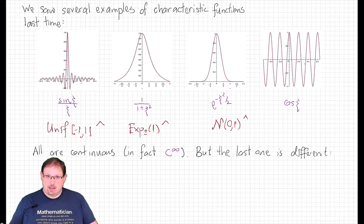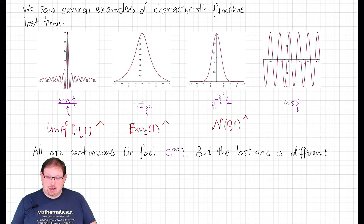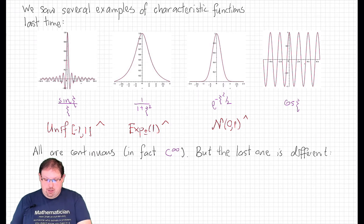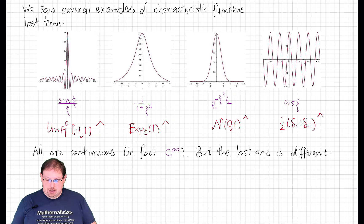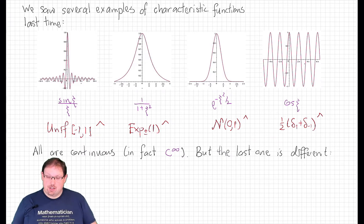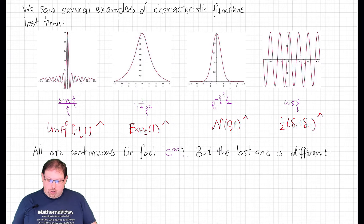And the humble cosine function is the characteristic function of the Rademacher distribution. All of these are continuous functions, in fact uniformly continuous, as is true of all characteristic functions. In fact, all of these are C∞, owing to the fact that the distributions that they are characteristic functions of all have finite moments of all orders.